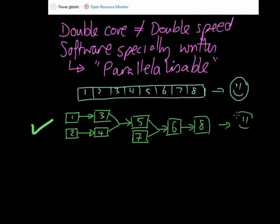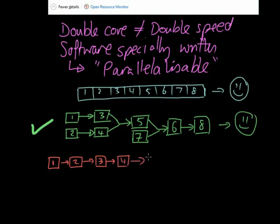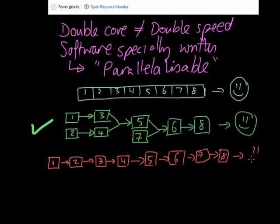However, if there is no way to break the jobs down so that two can run at the same time — in other words, if I have to do job one before job two, before job three, before job four, and so on sequentially through to job eight — then I can't take advantage of a multi-core processor. It has to be a parallelizable job; it has to exhibit parallelizability.